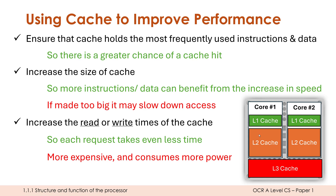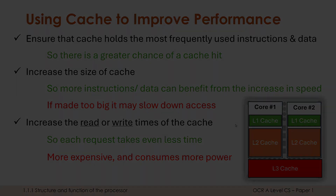It seems like a very complicated setup, but if it wasn't making a big difference, we would not be using it. Cache makes a huge difference in improving fetch speeds. If we can speed up fetch, that means we can speed up our overall execution. Fetching is almost always the slowest part of the process, which is why cache is really valuable.